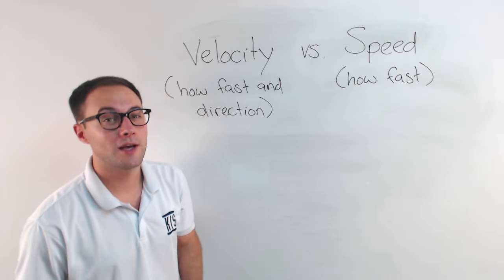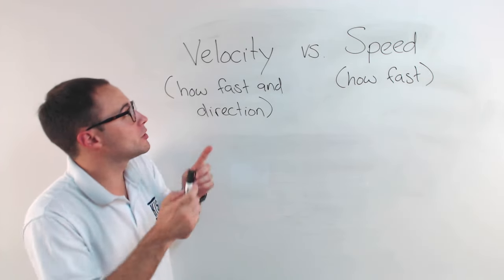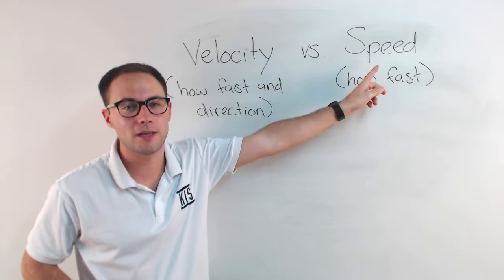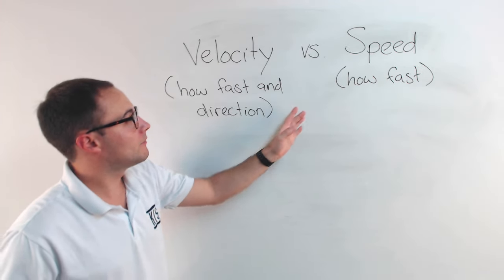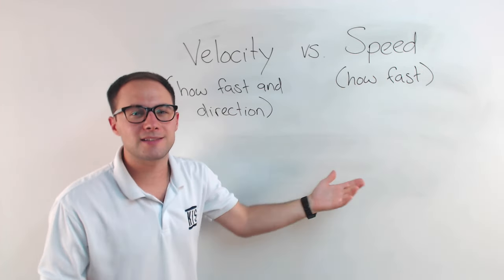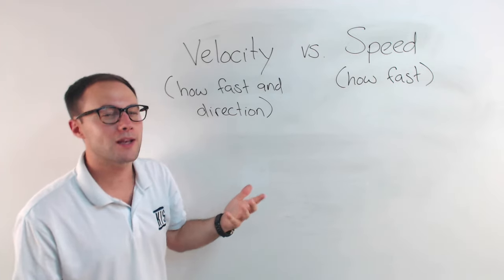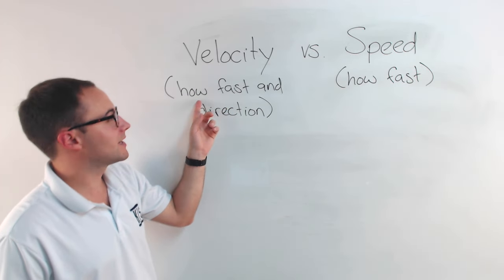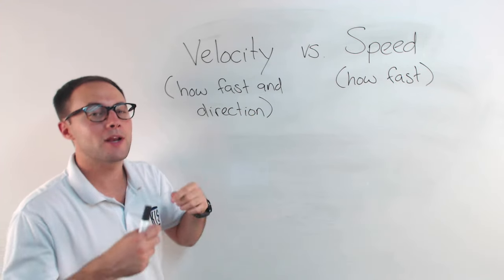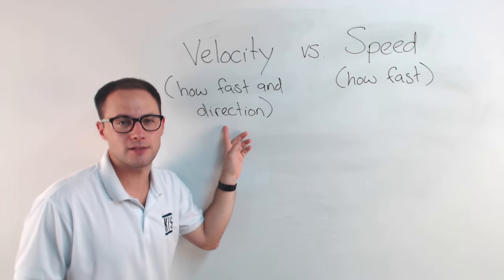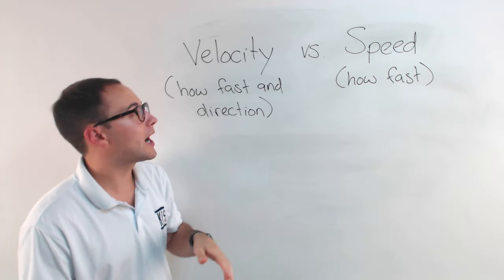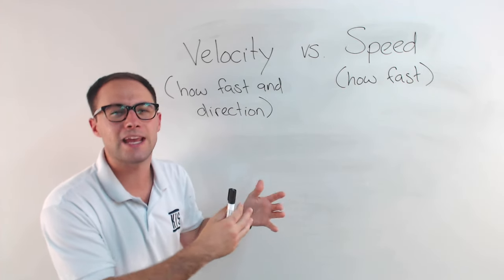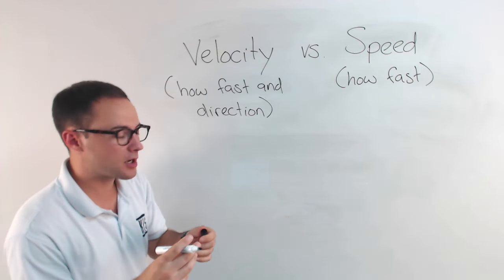Let's talk about those cars. But before we do, we need to determine what's the difference between velocity and speed. Speed is how fast something is going, but velocity is very similar to speed — it says how fast something is going, but it also tells you the direction it's going. Which is why in the example, one car was going at negative velocity.